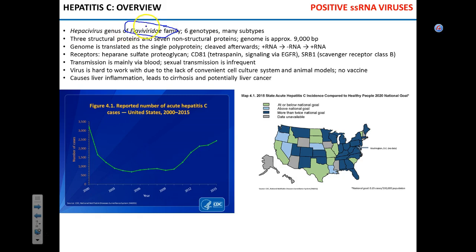There are receptors like heparan sulfate proteoglycan, CD81, and scavenger receptor — all three receptors are required for the entry of hepatitis C into the cell. It turns out that combination of these receptors can be found only in the human liver, which makes hepatitis C terribly hard to work with.